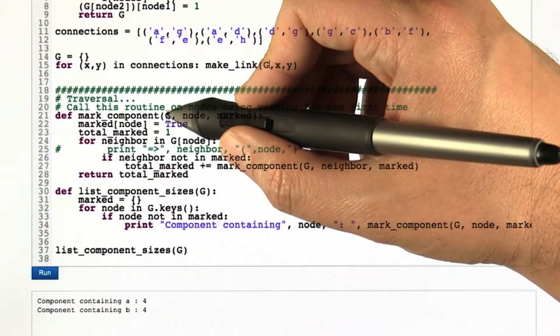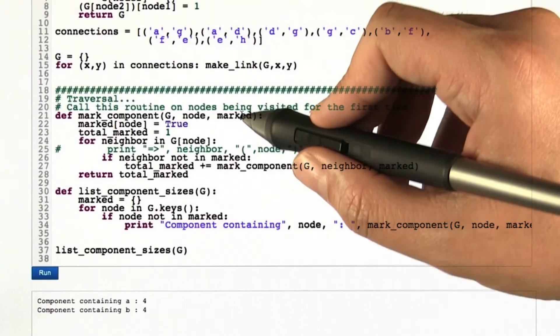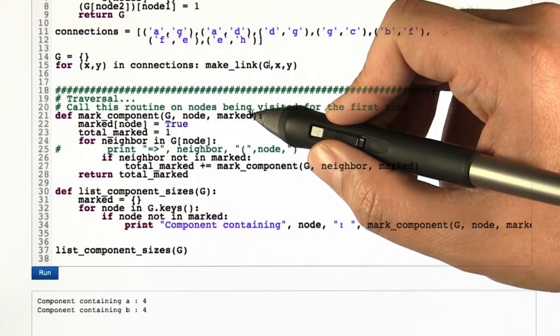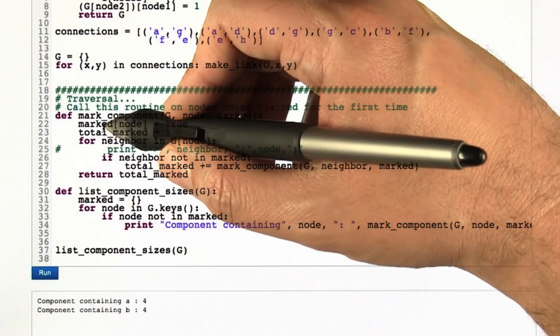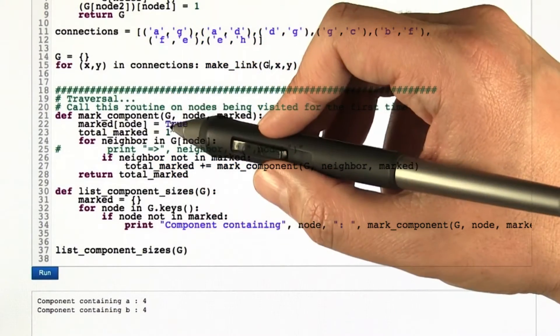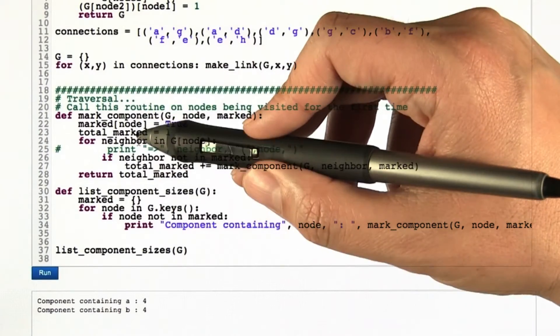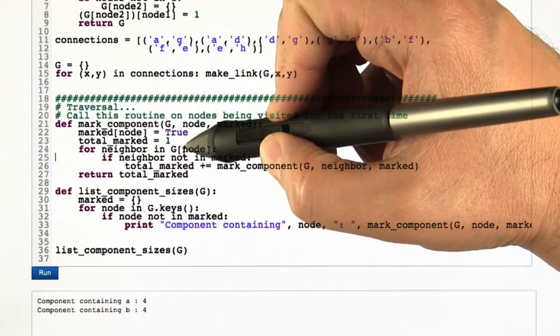We give it the graph that we're working on, the current node that we're marking and a data structure that keeps track of which things have been marked so far. Call this routine on this node and so that's a new node. We haven't seen it before so we mark it. That means we visited that node and we say that in this particular call to the routine, so far we've marked exactly one node.